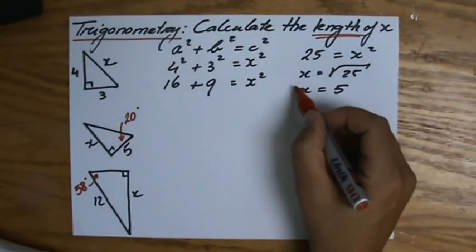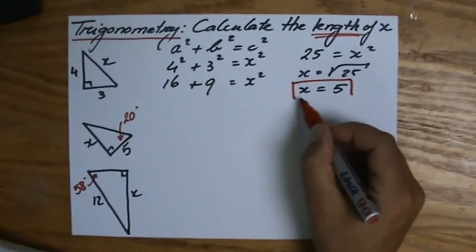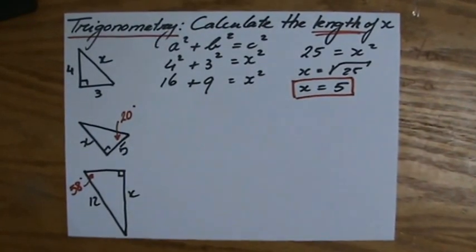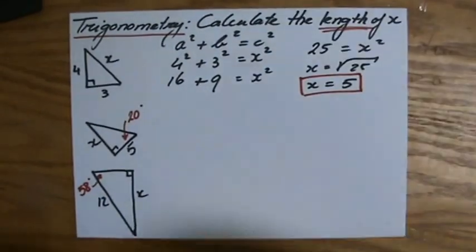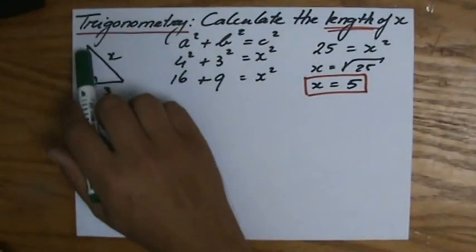So they give me two lengths or two sides in a right-angle triangle. Pythagoras' Theorem will always enable me to calculate the third side in a right-angle triangle.